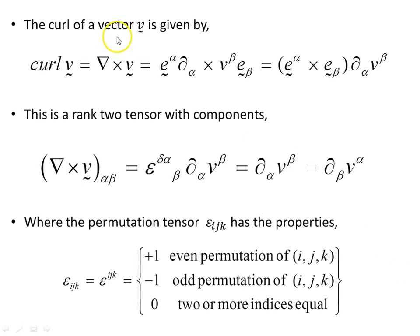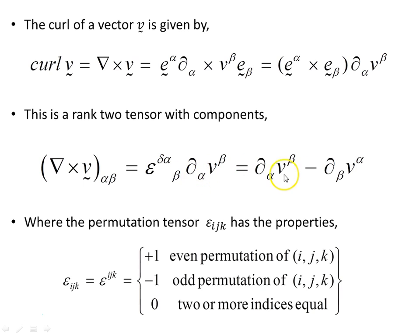The curl of a vector — del cross V — is this operator crossed with the vector expanded in basis form, so V beta contravariant components and E beta covariant basis vectors give us this object. This is a rank-2 tensor, and the components we're interested in use the epsilon orientation (permutation) tensor. It can be written in covariant form with the del operator — it means the same thing. There are scalar components so the partial derivative applies. The permutation tensor has these properties: an even permutation gives plus 1, an odd permutation gives minus 1, and two or more equal indices give 0.